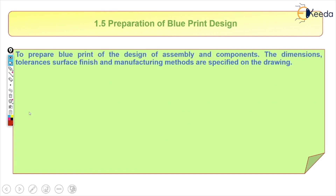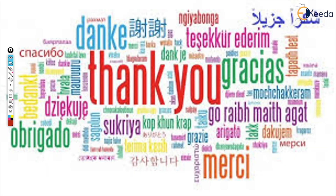The last point is preparation of blueprint design. In this final step, having designed individual components with all safety factors and safety measures, we assemble everything through sketches and diagrams to prepare a blueprint. This blueprint contains the final dimensions of the particular product or machine element, and through this blueprint, the product is ready for manufacture. This concludes the video.